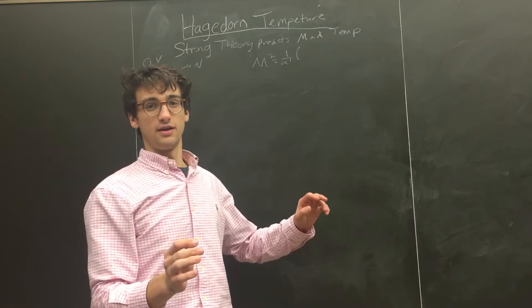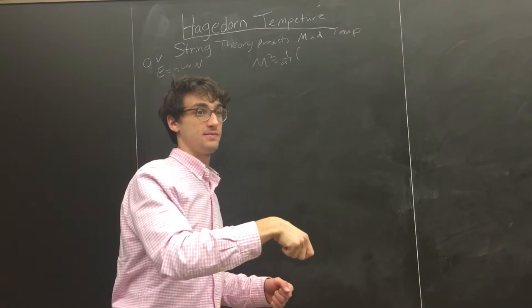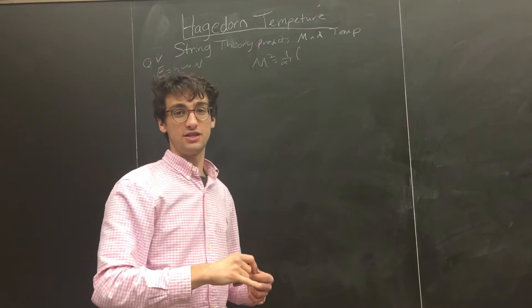In string theory, it's called the Regge slope parameter. It was originally used to relate the angular momentum of two quarks to its energy, or two mesons, or one meson.